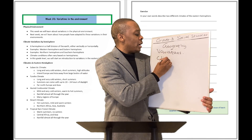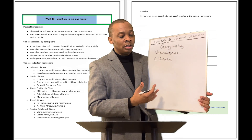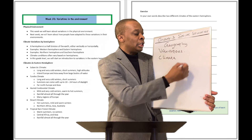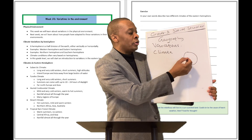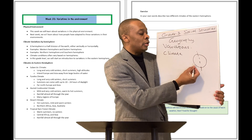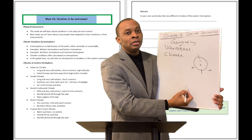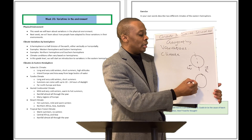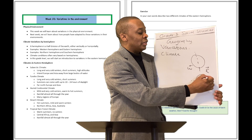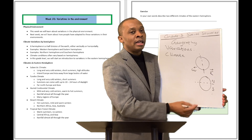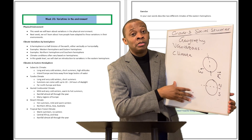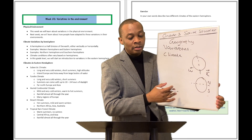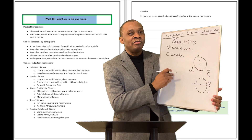Let's look at climate variations — specifically, climate variations by hemisphere. What is a hemisphere? A hemisphere is a half division of the Earth's surface, either vertically or horizontally. If you divide the Earth vertically, you have a western hemisphere and an eastern hemisphere. If you divide the globe horizontally, you have a northern hemisphere and a southern hemisphere. For this grade level, we're going to concentrate on the eastern hemisphere for the most part.